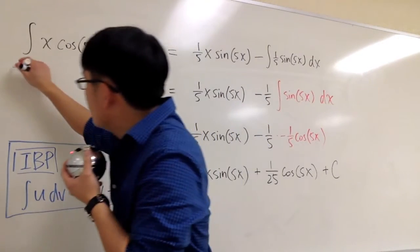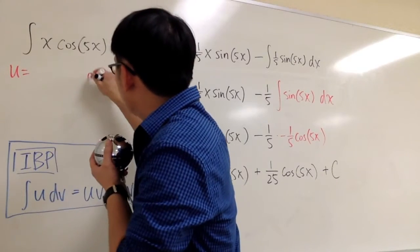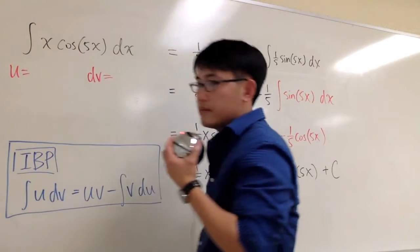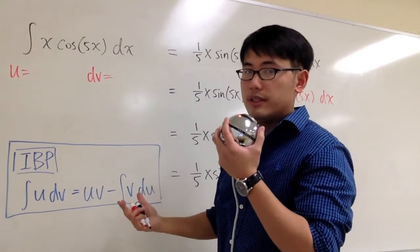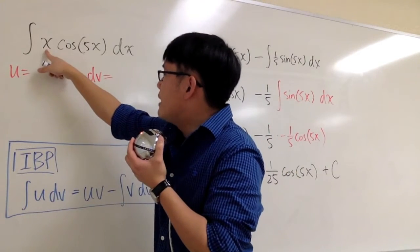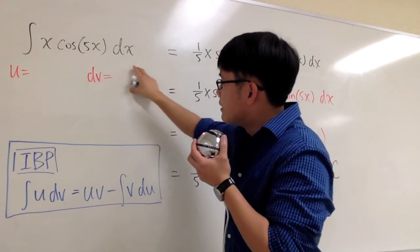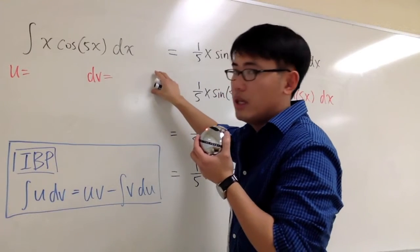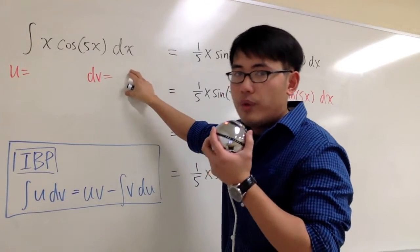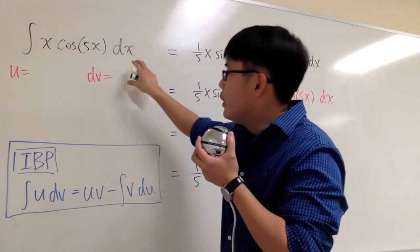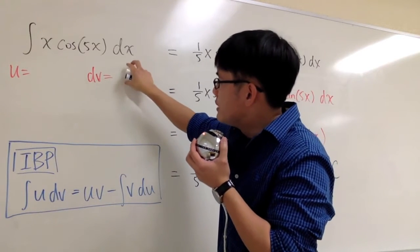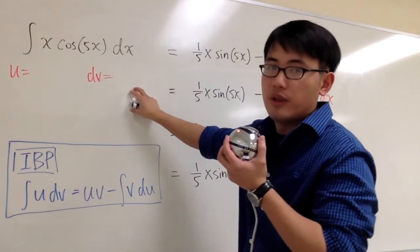Let's get to work. So I'm going to pick u right here, and I'm going to write down dv right here. And we have two choices, namely x and cosine of 5x. Technically, you should consider what you should put down for dv, because the things that you put down for dv, we have to integrate that. We must make sure to choose something that we know how to integrate for dv.